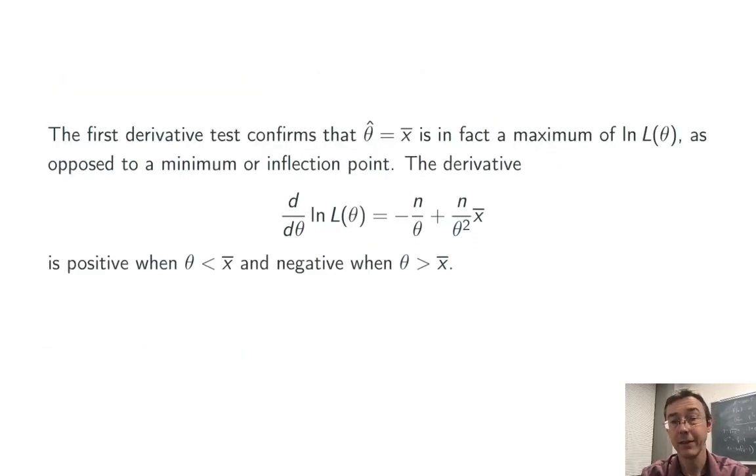We can confirm that, in fact, this is a maximum value, not just a local minimum or something, by using the first derivative test. In this case, the derivative is positive to the left of that critical value, negative to the right. There's only one critical value on this interval, the interval where theta is defined, and so it has to be an absolute maximum value.